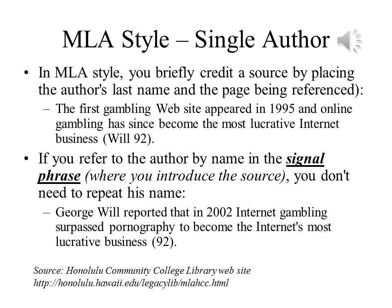The simplest kind of work to cite is where there is one author. In the first example, we place the last name of the sole author in parentheses, together with the page being cited. But if the author's name comes up in the sentence, you don't need to repeat it — all you need is the page being referenced. Please note that the place where you introduce the source is called the signal phrase. In our example, that would be where we write 'George Will reported that,' and so on.